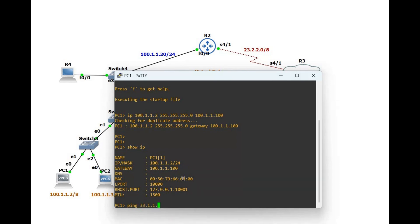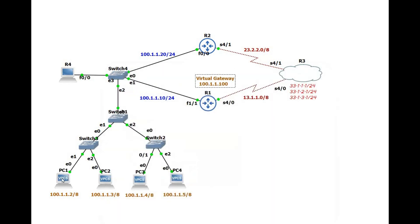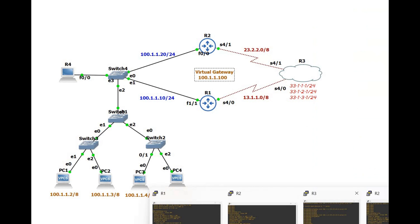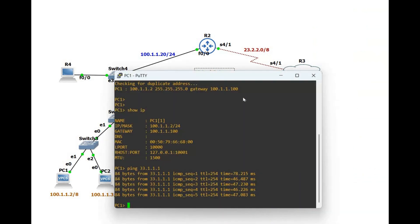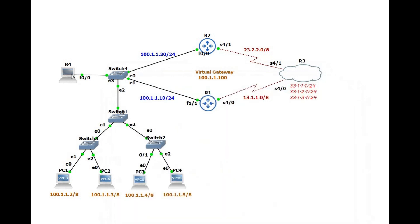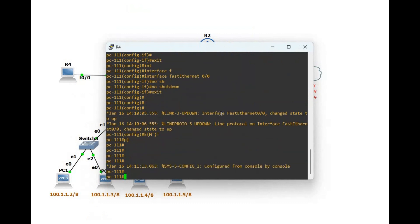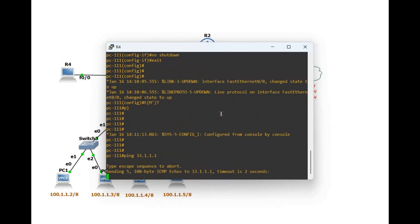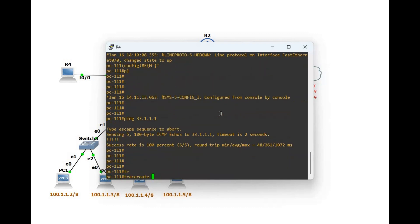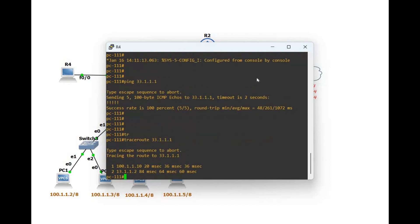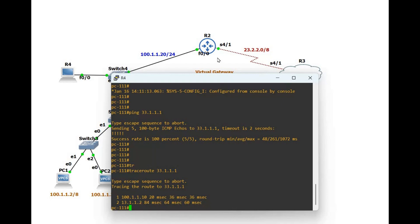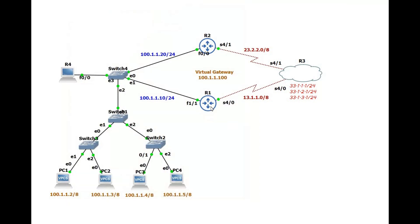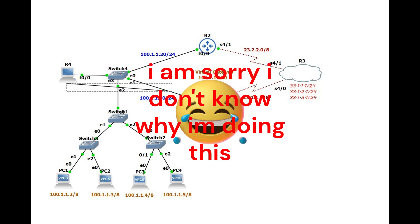Let's ping 33.1.1.1 from the PC to verify connectivity to the ISP router. Then run 'traceroute 33.1.1.1' — you can see traffic is going via Router 1, confirming that the primary router is handling the traffic as expected.